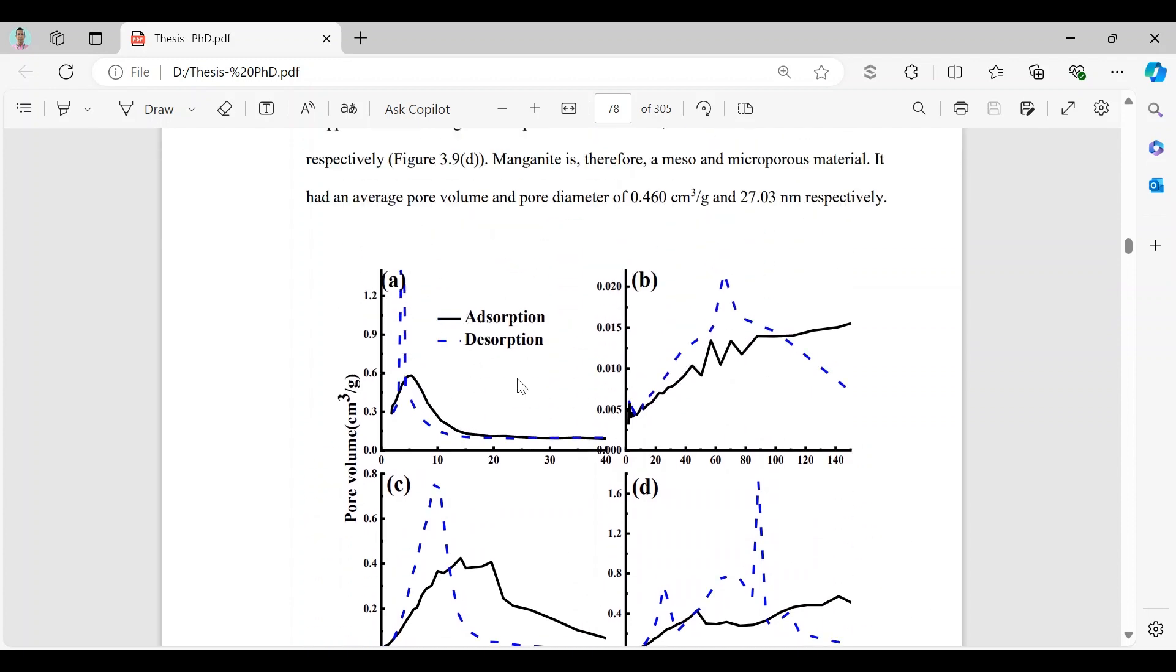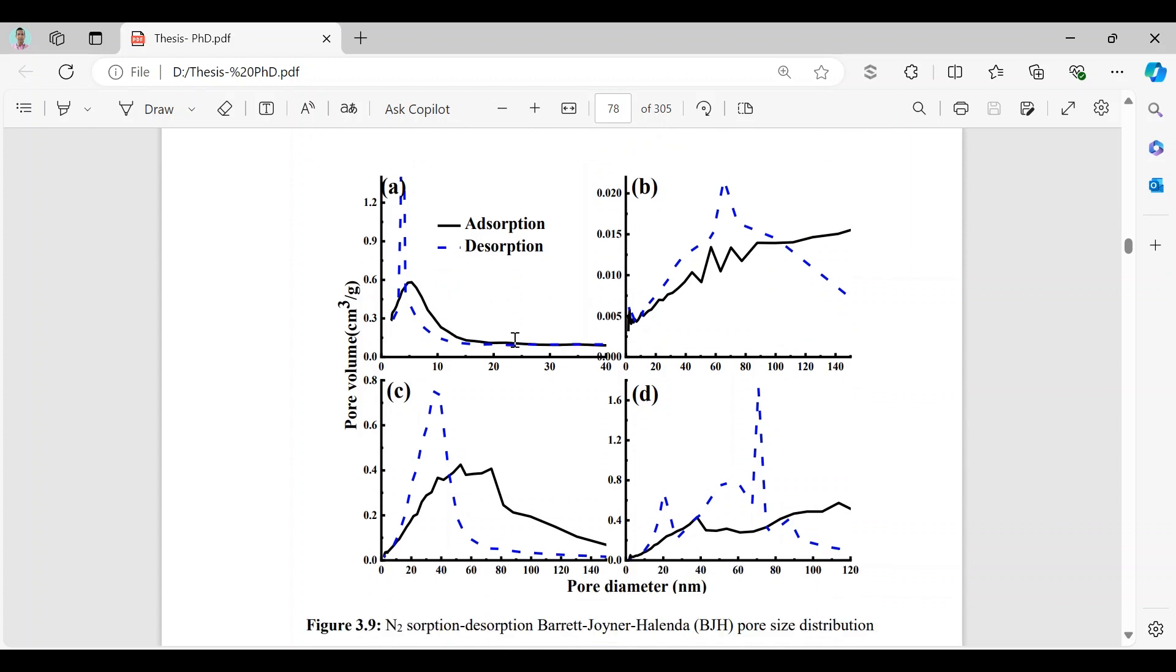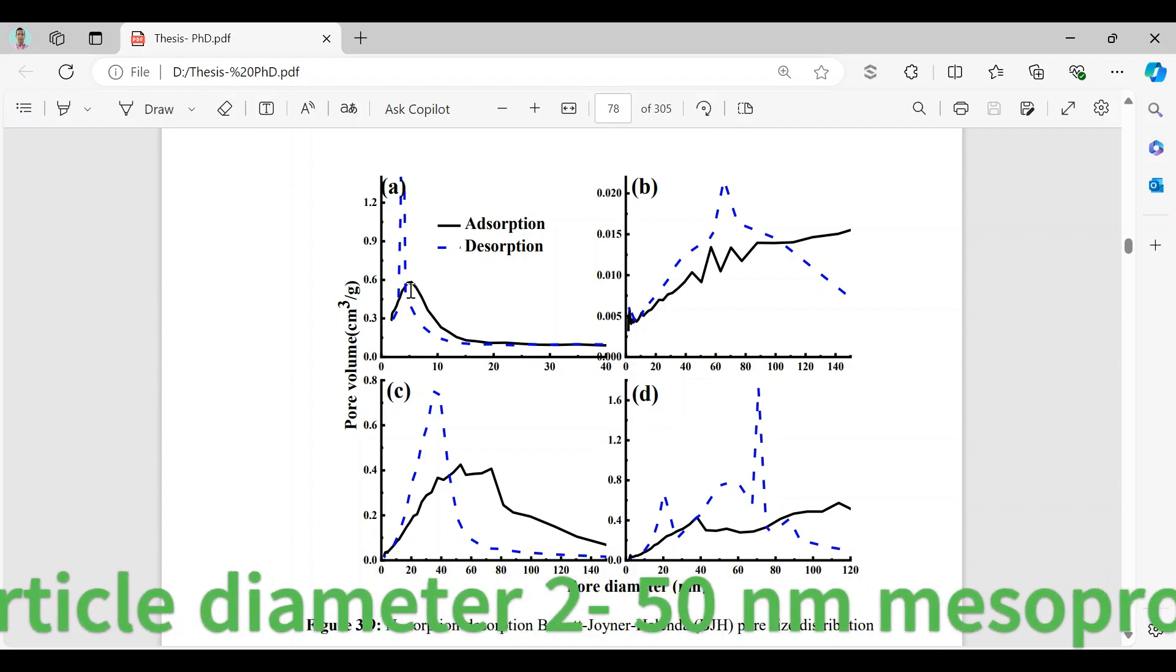The first one is barnesite. If we consider barnesite we see that the absorption curve is this and desorption curve is this. That means only a single peak is observed at around 5 nanometers. So the particle distribution curve is here and barnesite is mesoporous in structure.